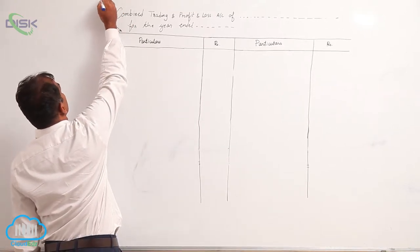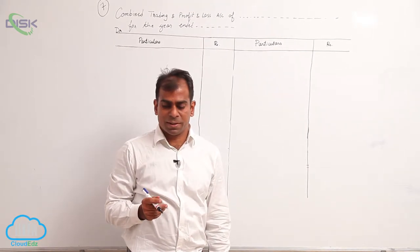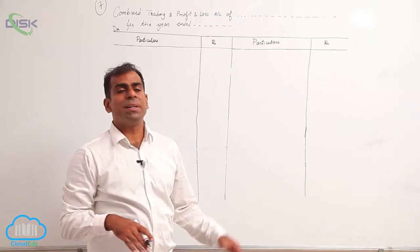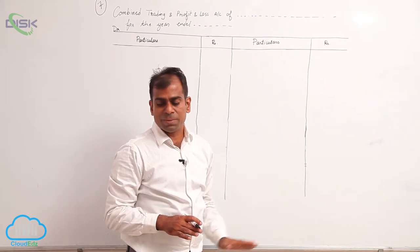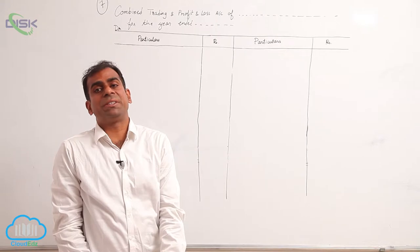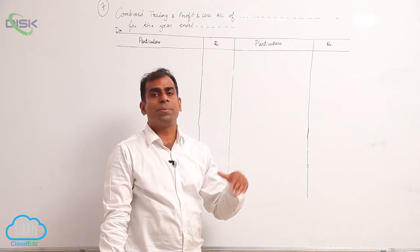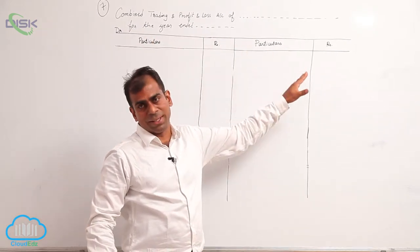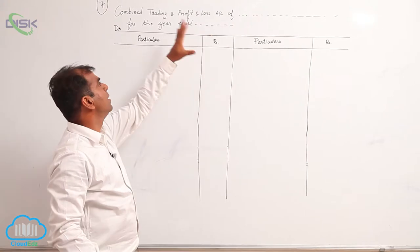We are going to discuss the seventh problem. In the seventh problem you are instructed to prepare both trading and profit and loss account, because it says 'from the following information prepare profit and loss account.' The possibility of preparing a profit and loss account arises only when you have gross profit. In this problem you are not given gross profit, but you are given information related to the trading account. So we have to prepare both. We generally write a combined trading and profit and loss account.